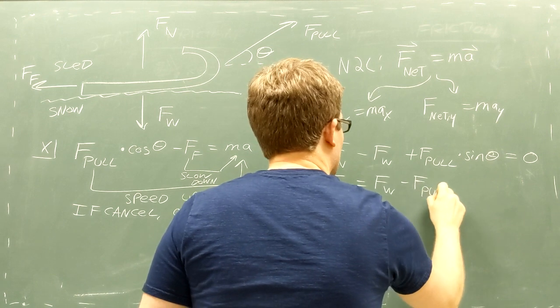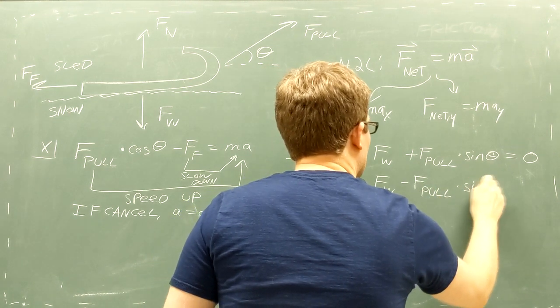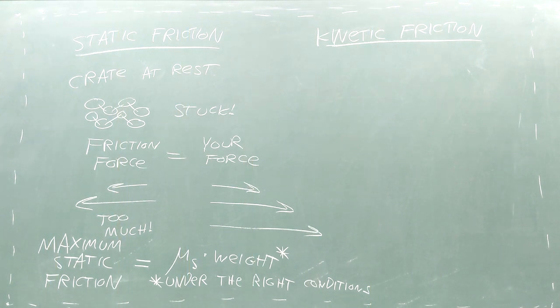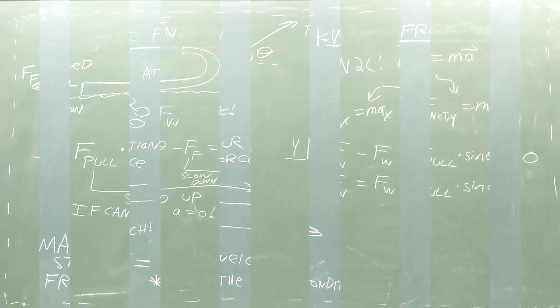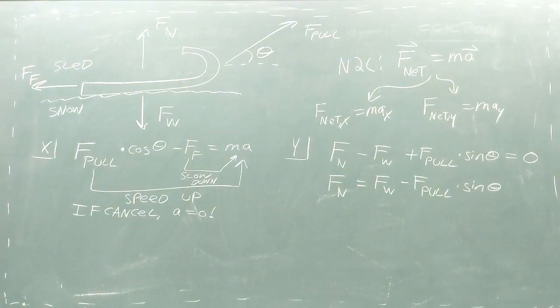Remember how last time I said that the normal force isn't always equal to the weight? Well, here's a prime example of when the normal force is not equal to the weight. The normal force equals the weight minus the vertical component of your pulling force.